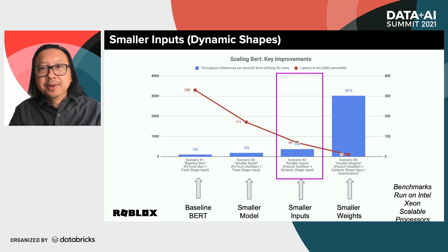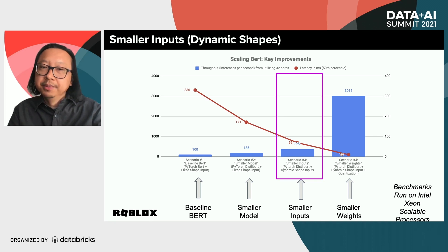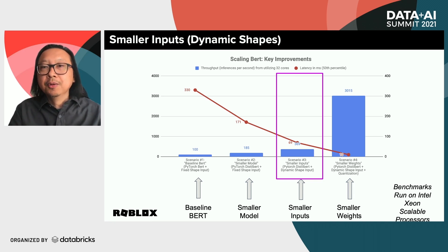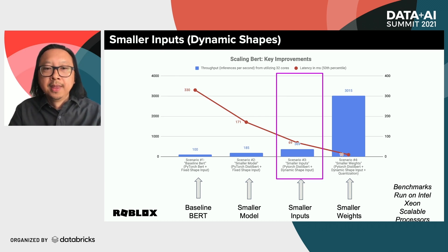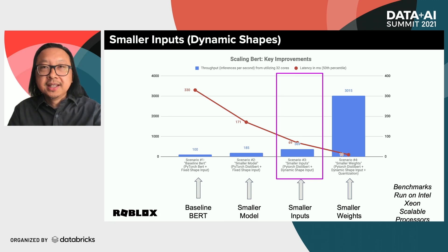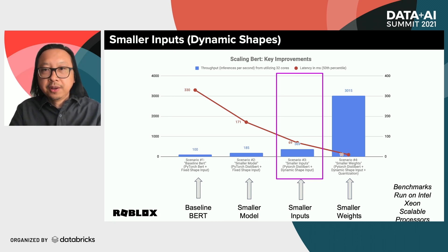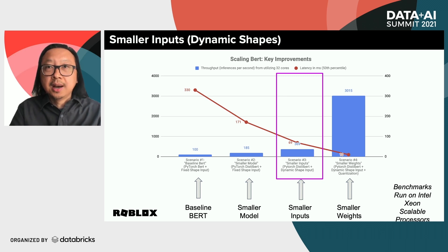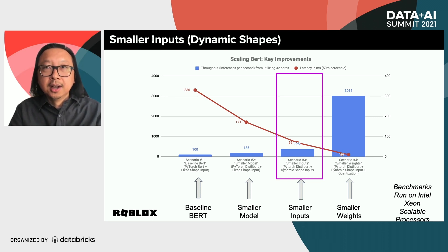Continuing with the theme of less is more, our next big optimization came from smaller inputs — avoiding the zero-padding of input vectors that we pass into the DistilBERT model. Another big improvement here, with average latencies down to 69 milliseconds and throughput almost doubling again to 369 messages per second.